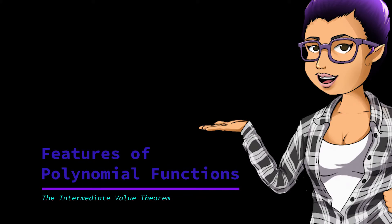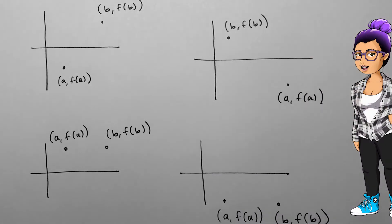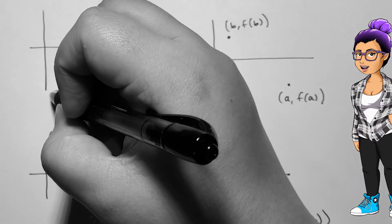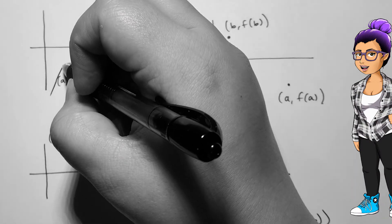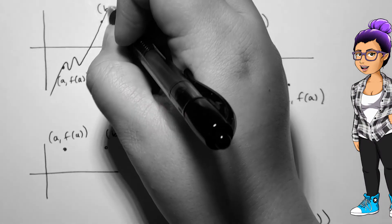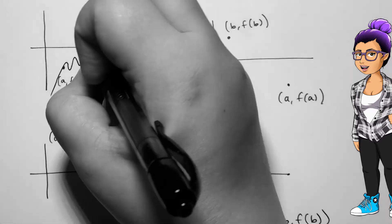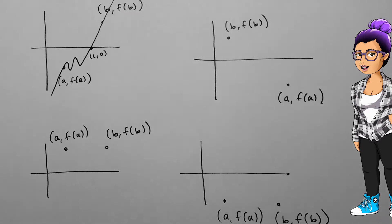The Intermediate Value Theorem: if we have a polynomial function f of x and we have outputs f of a less than 0 and f of b greater than 0, then there's some c between a and b so that f of c is 0. In plain language, two points on a polynomial function which lie on either side of the x-axis have to have an x-intercept between them.